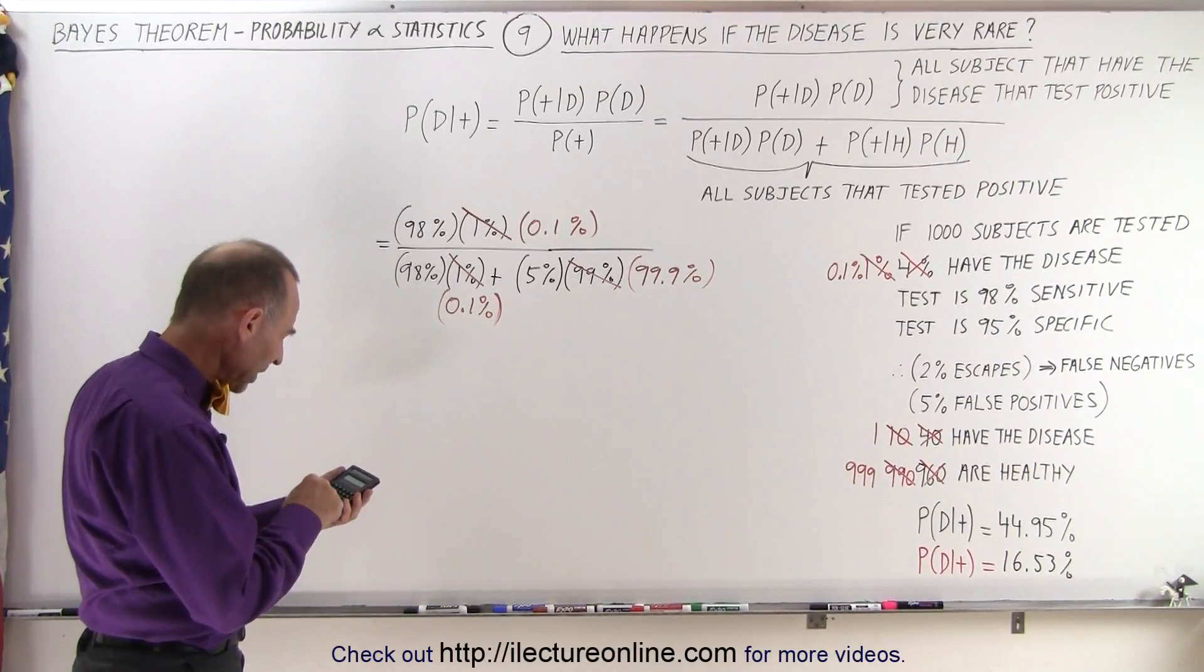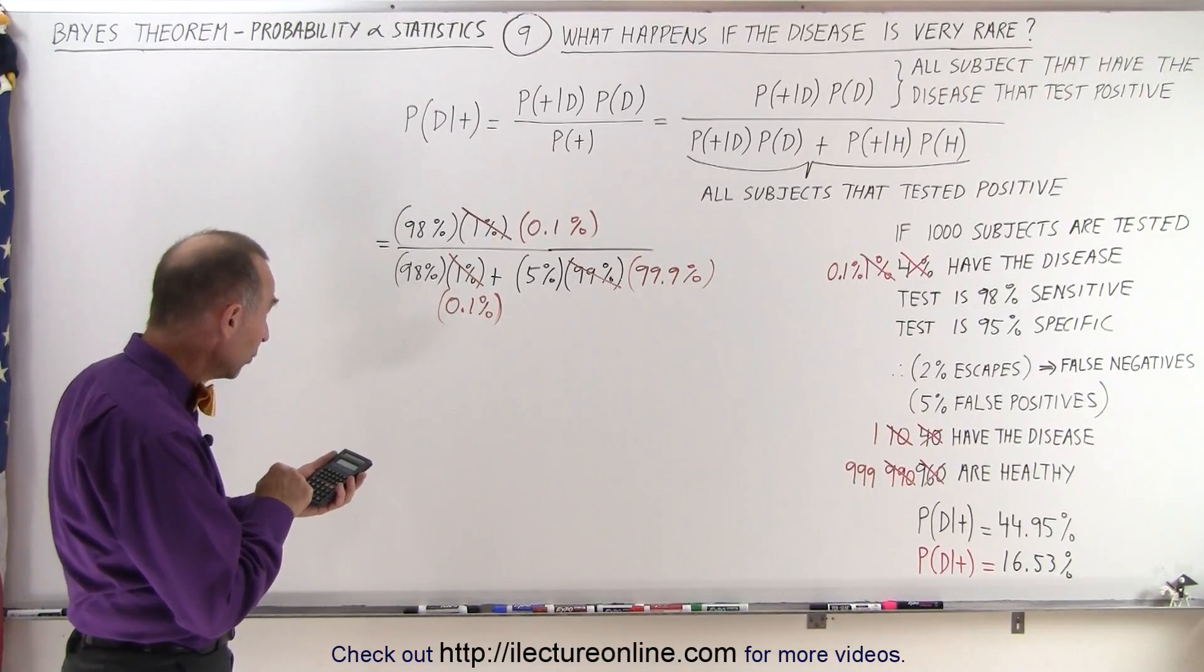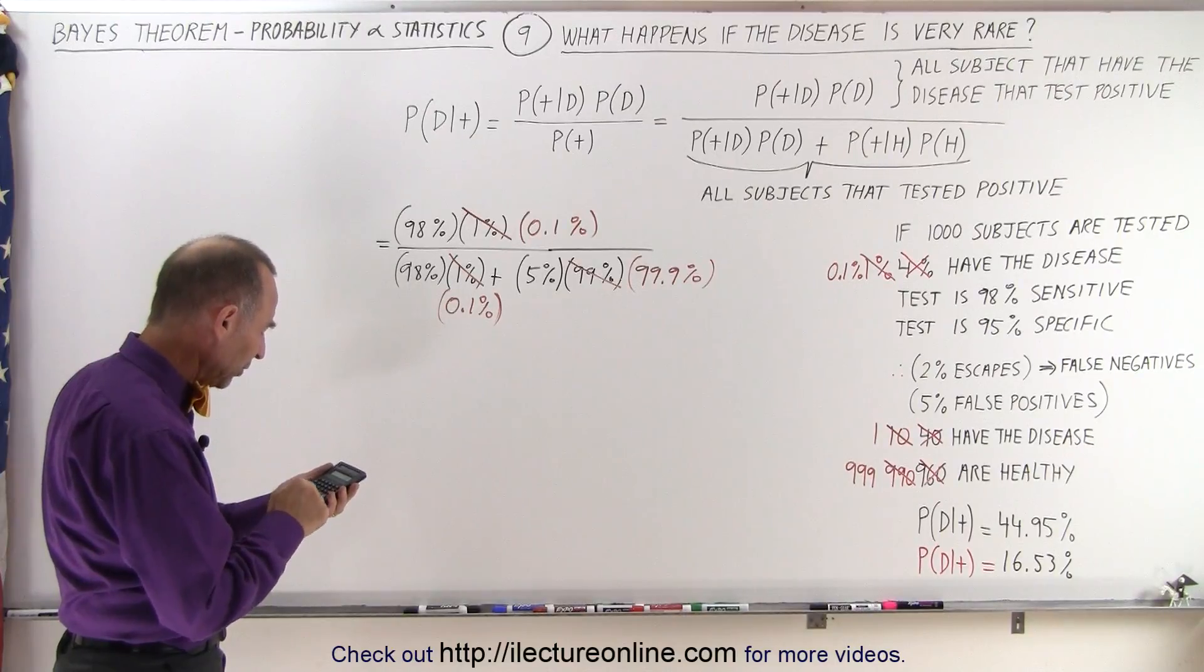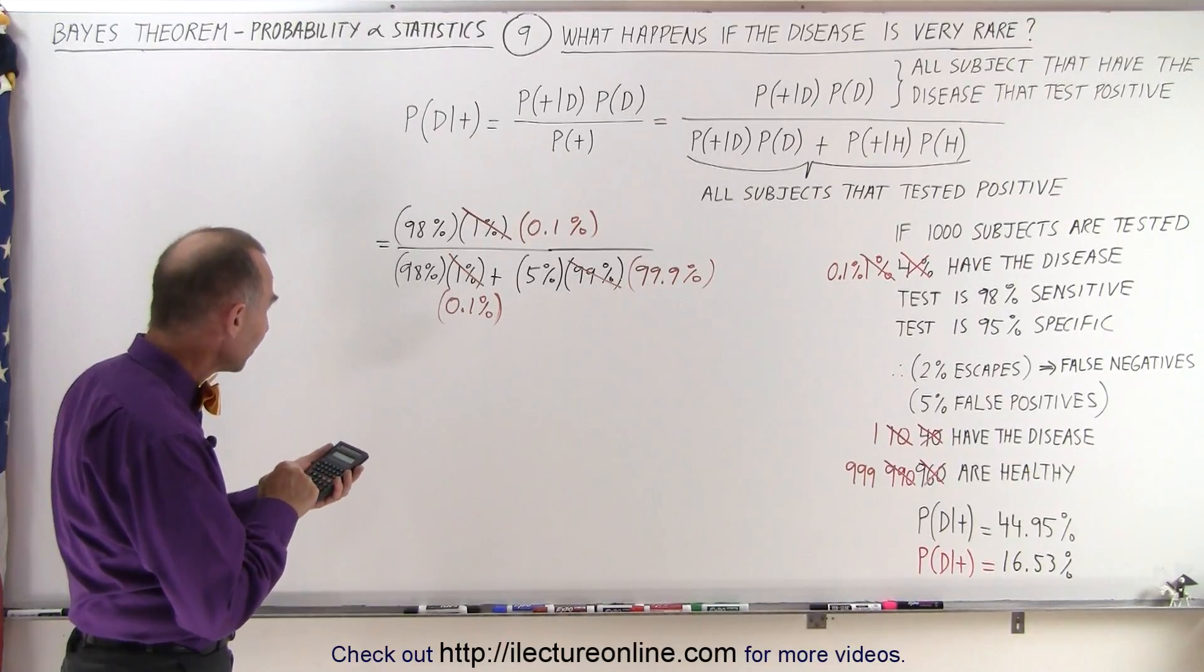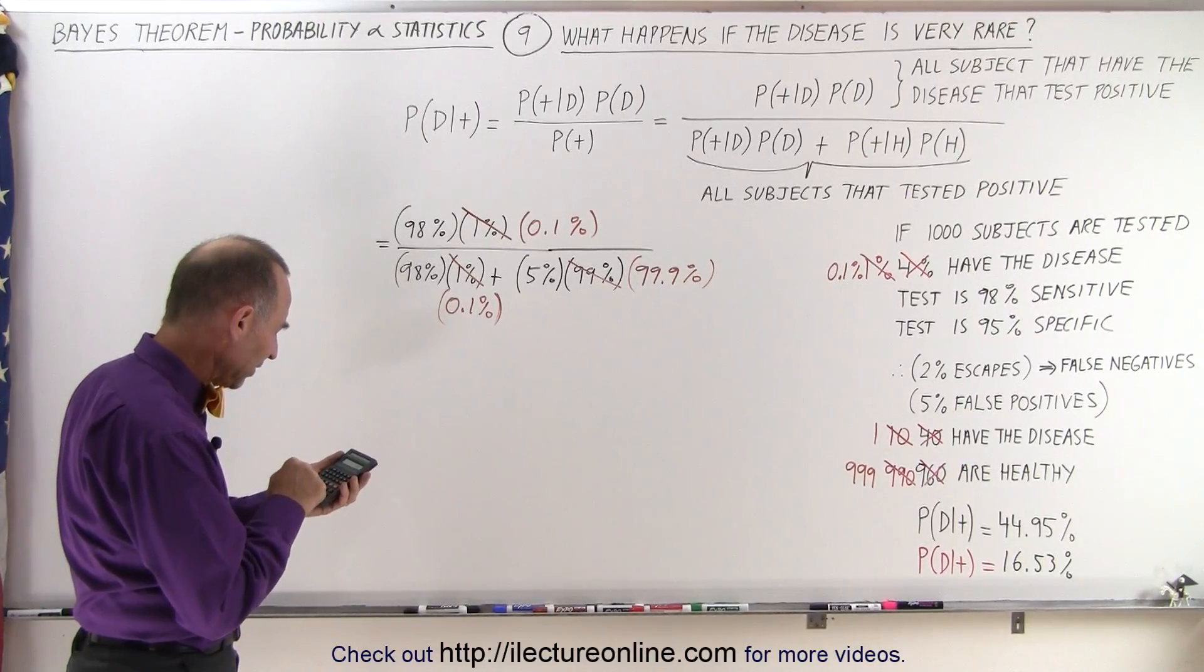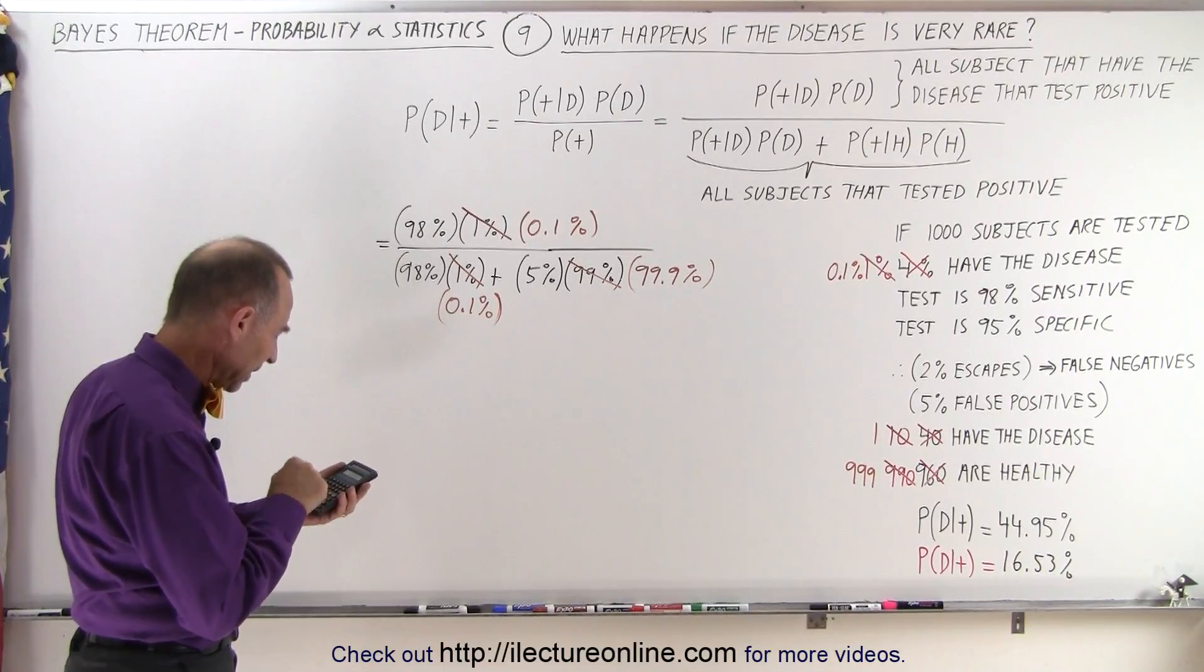So we end up with 0.98 times 0.001, because we're converting to decimals. And then we divide that by the quantity 0.98 times 0.001 plus 0.05 times 0.999.